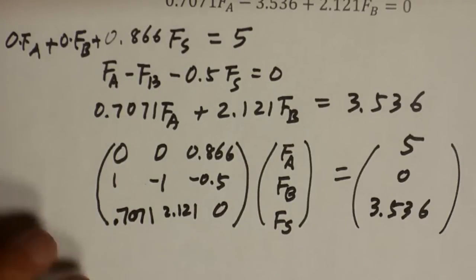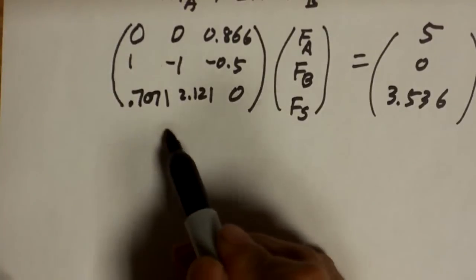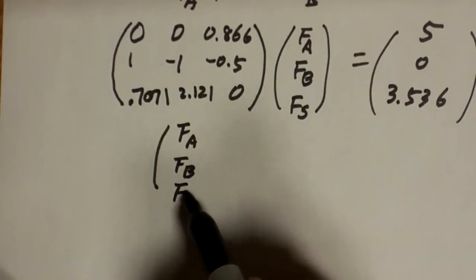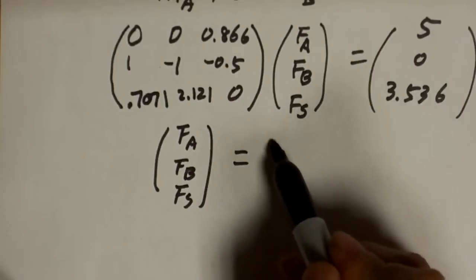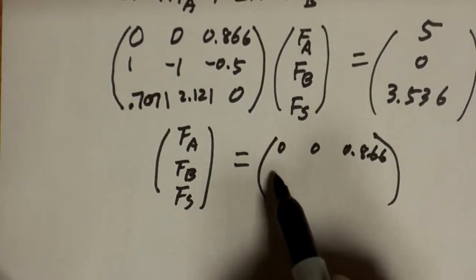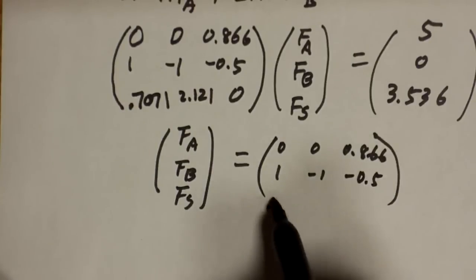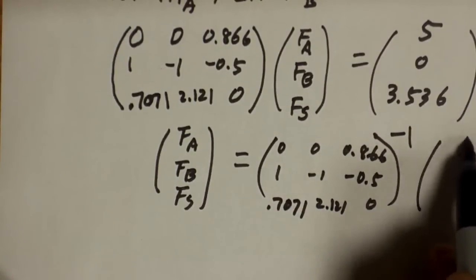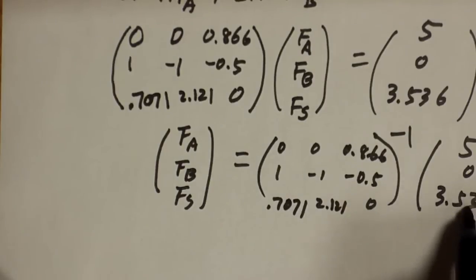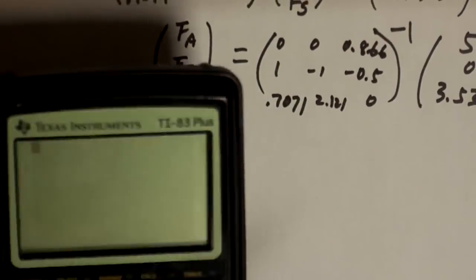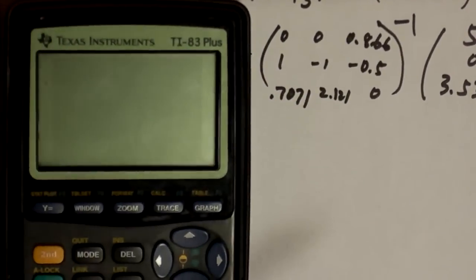Okay, in the other video, I explained that once you put it into this AX equal to b format, the solution is simply A inverse B. In other words, Fa, Fb, Fs is equal to the inverse of this big matrix: 0, 0, 0.866, 1, negative 1, negative 0.5, 0.7071, 2.121, 0, multiplied by the vector 5, 0, 3.536.